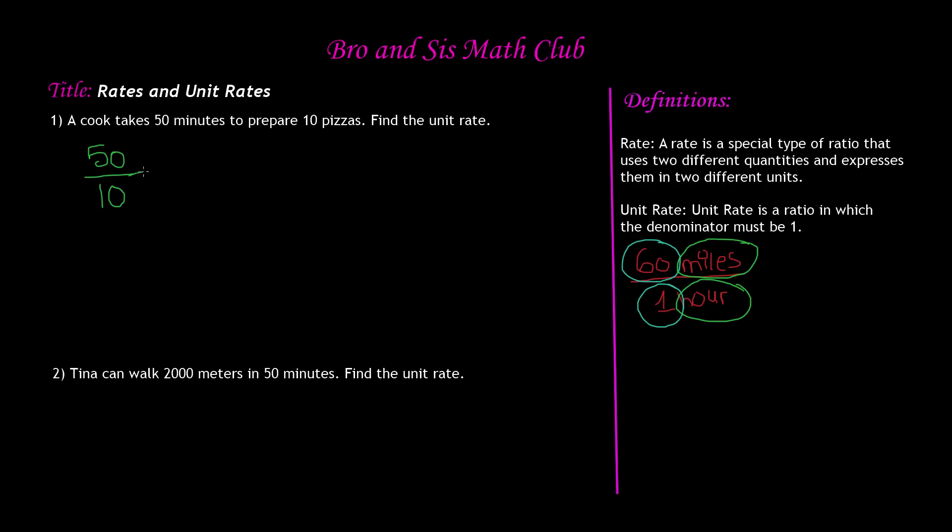We also have to include our units. So it's 50 minutes and 10 pizzas. So here our quantity is 50 and 10, and our units are minutes and pizzas. Now to find the unit rate, the denominator of the ratio must be equal to 1. So that means the denominator of our ratio has to equal 1.